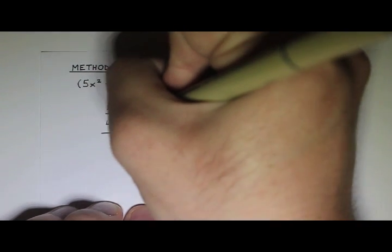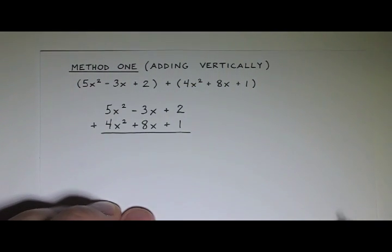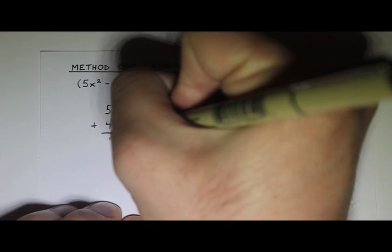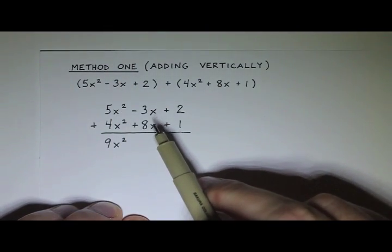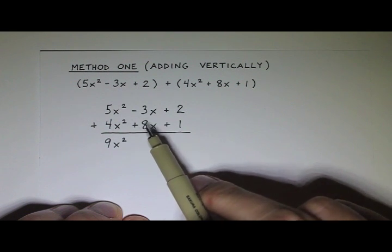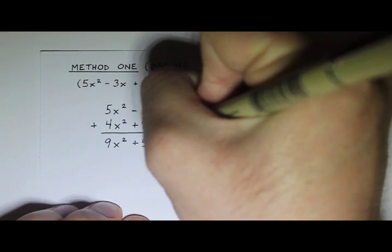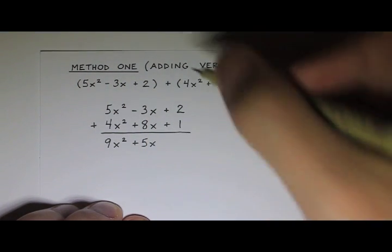And then I'm going to add them. And I just add them term by term. So the x-squared terms, I have a 5 plus a 4. That's 9x squared. And then the x-terms, I have negative 3 plus 8. That's a positive 5x. And then plus 2 plus 1, that's 3.